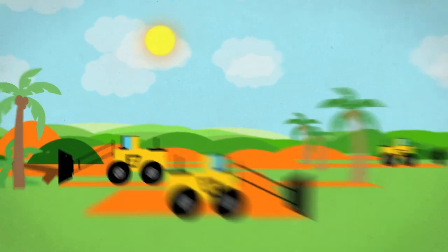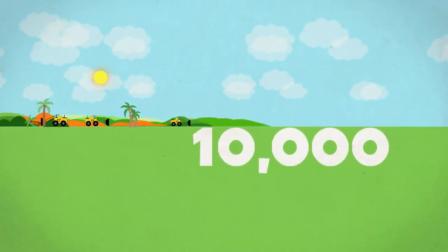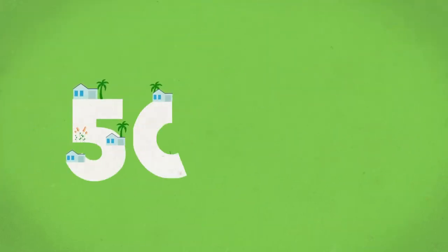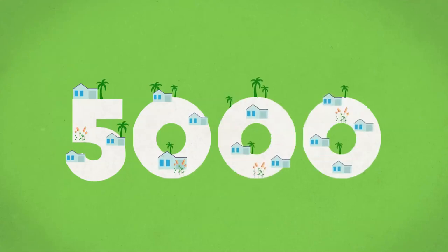A big land deal typically covers 10,000 hectares. That's enough land for 5,000 small farms that can feed thousands of hungry people.